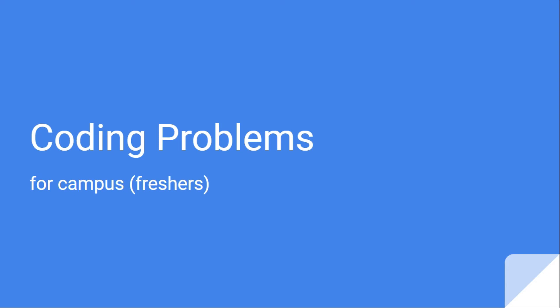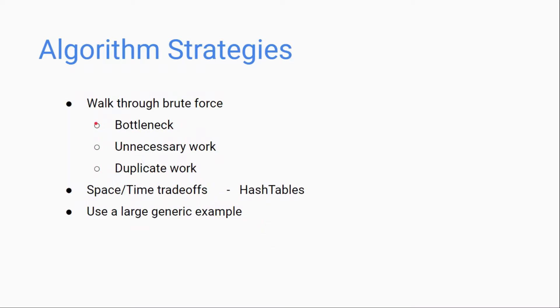In this video series we will see the coding problems for campus selection and the approach to solving the problems. There are three algorithm strategies to approach a solution: first, walk through brute force. After writing a brute force algorithm, we will see the base case in the problem — this is the bottleneck of the problem.